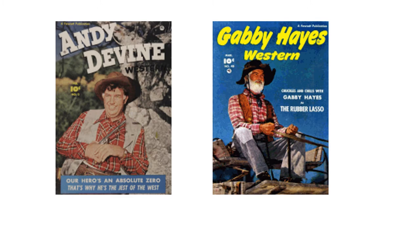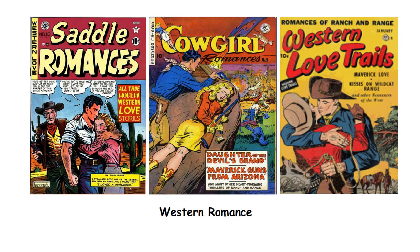Westerns got really big in 1948. You know what else got really big? Romance comics. So let's do the math: Western comics are big, romance comics are big — Western romance comics are almost a guarantee. There were several titles specifically geared toward romance stories with cowboys and cowgirls. One of them, Saddle Romance, came out from EC Comics with a cover by Al Feldstein. This is one of the titles that EC canceled in 1950 when they decided to go with their new trend comics.